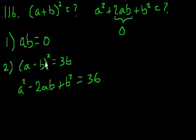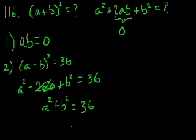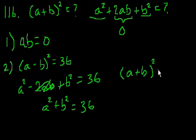But if you use them together, you expand out statement 2, you get this. Now, if we also take in statement 1 and we say ab is equal to 0, so then that term is equal to 0. And we're left with a squared plus b squared is equal to 36. And if a squared plus b squared is equal to 36, then we know that this a squared plus b squared is also equal to 36. So that tells us that a plus b squared is equal to 36 as well.